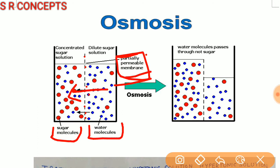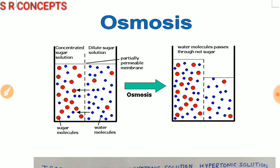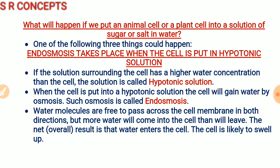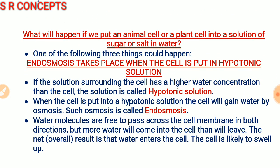As a result of osmosis, most of the water moves to the left-hand side. The amount of solution on the right decreases and on the left increases. Now let's understand what happens when we place an animal cell or plant cell into a sugar or salt solution — one of three things could happen.